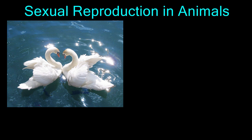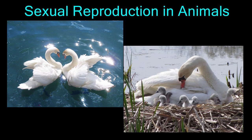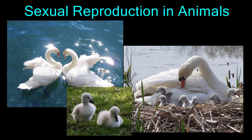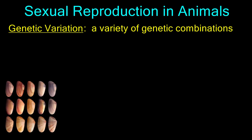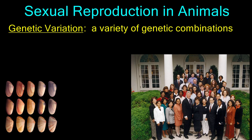As you know, sexual reproduction involves two parents, each contributing half of their genetic material to their offspring. The advantage to sexual reproduction is that each individual offspring is genetically different from the others and from the parents. Sexual reproduction in animals results in populations that have genetic variation, a variety of genetic combinations that give each individual its own unique traits. This variation is very important to the survival of the species.